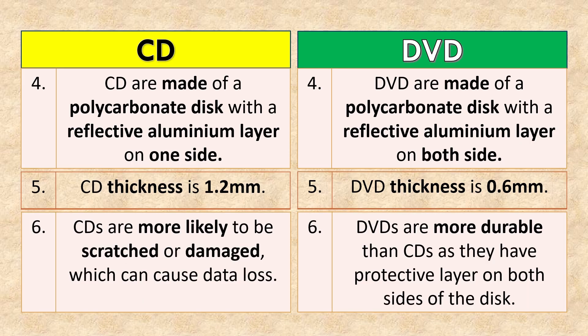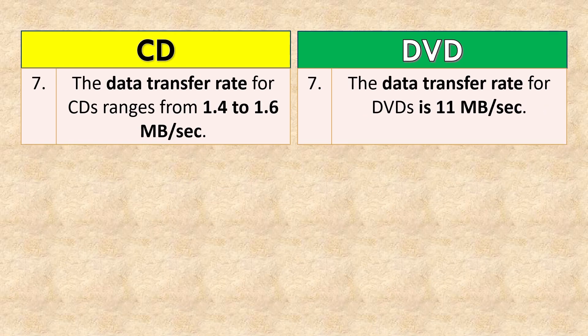CDs are more likely to be scratched or damaged, which can cause data loss. DVDs are more durable than CDs as they have a protective layer on both sides of the disc. The data transfer rate for CDs ranges from 1.4 to 1.6 MB per second, while the data transfer rate for DVDs is 11 MB per second.